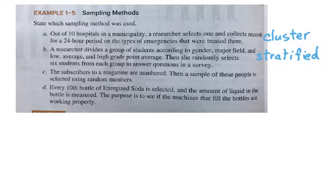In Part C, it says the subscribers to a magazine are numbered. Then a sample of these people is selected using random numbers. That's got to be random.